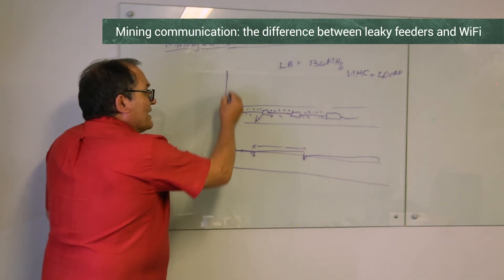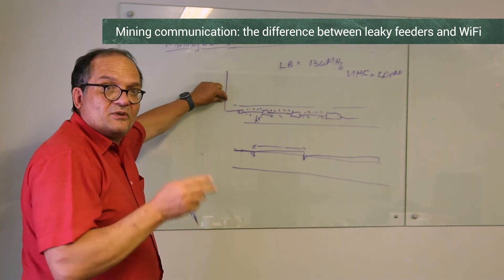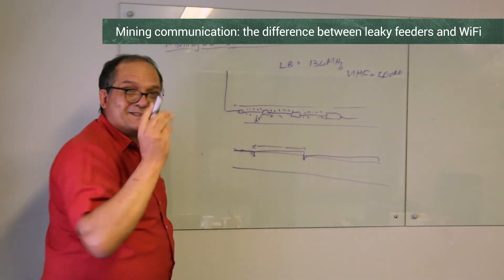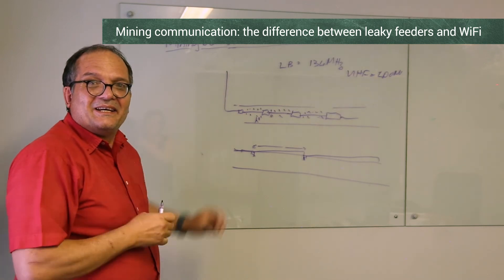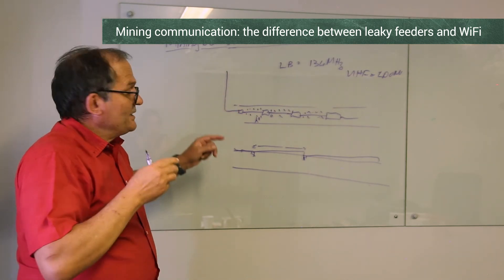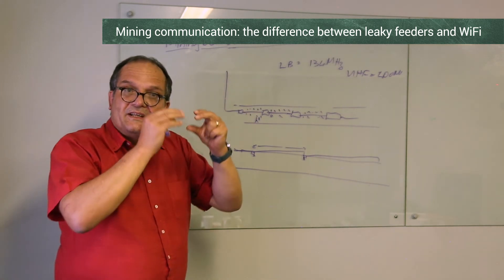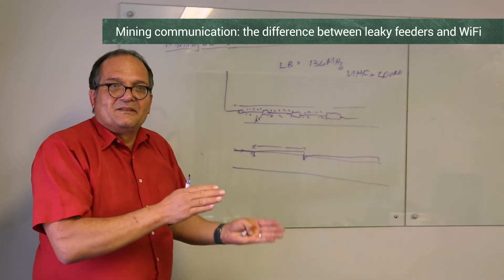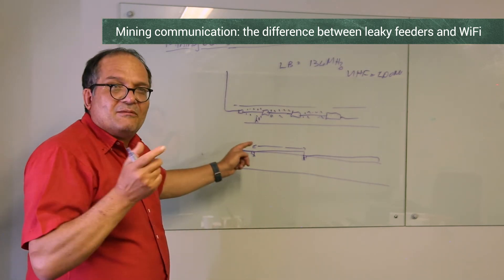Some people also use cable modems and put data on the cable which no longer radiates. Then you can put cable modems to WiFi and still use the leaky feeder part but at low frequencies. They put the WiFi data part at baseband, as it's called—not at radio frequency.